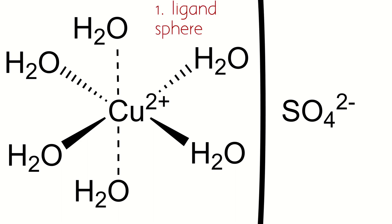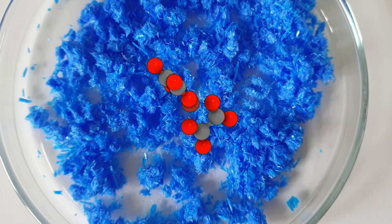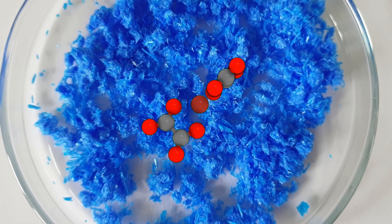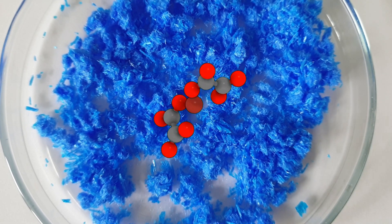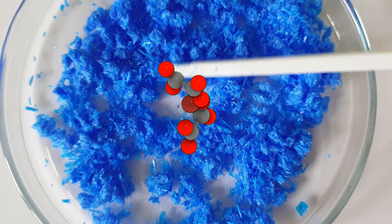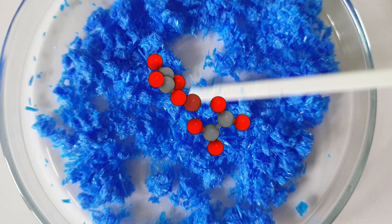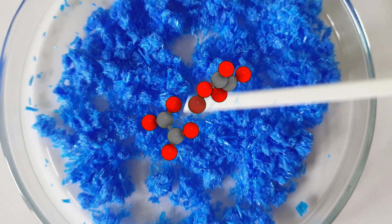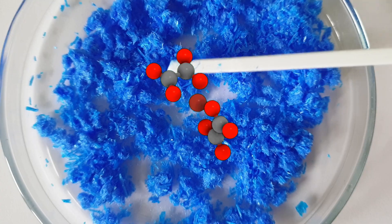This is the first ligand sphere of the copper ion. The second ligand sphere contains only weakly coordinating ions, like the sulfate ion in our case. In this video I will make potassium bisoxalato cuprate 2, where the ligands around the copper ion will be two oxalato ligands coordinated as a tetrahedron.